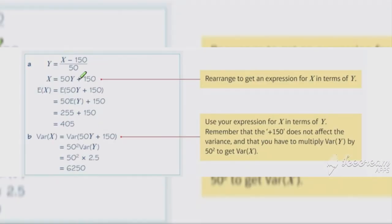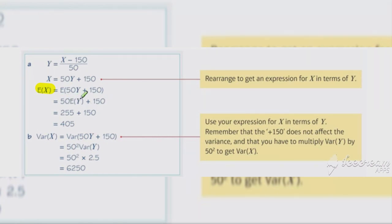Here's our solution. We know that the expected value of x is equal to the expected value of 50y plus 50, because we've rearranged y to make x the subject. Then we can use our formula for expectation of a linear function — we multiply the expected value of y by 50 and add on 150, giving our answer of 485.